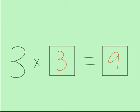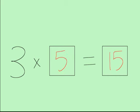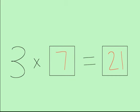3 times 3 equals 9. 3 times 4 equals 12. 3 times 5 equals 15. 3 times 6 equals 18. 3 times 7 equals 21.